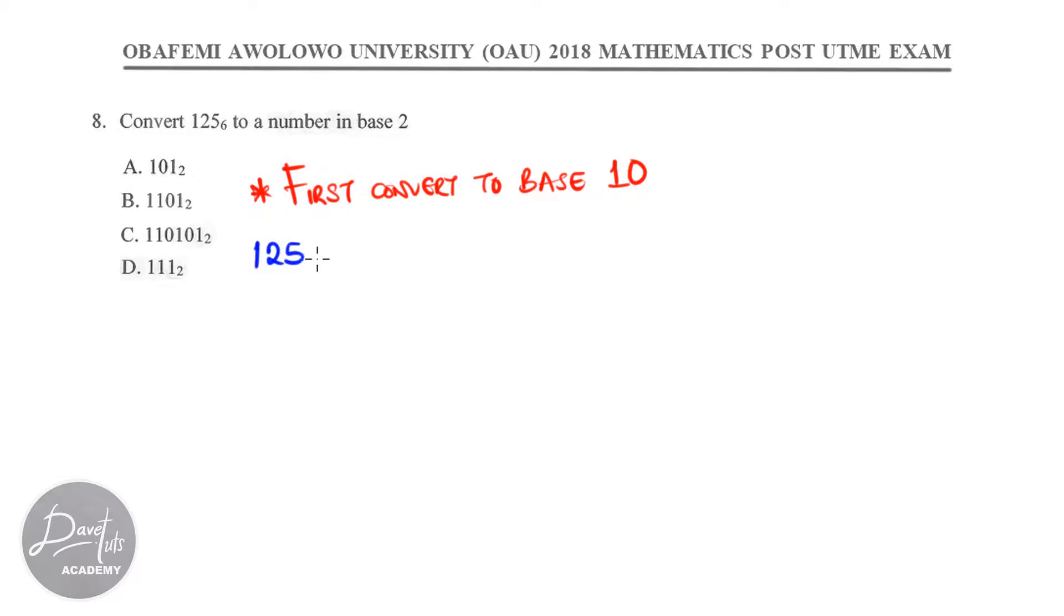So, how do we now get this 125 base 6 to base 10? We are going to multiply each of the digits by 6 raised to power the corresponding power of 6. So now, for the last entry 5, we have 6 raised to power 0, for 2, 6 raised to power 1, and for 1, 6 raised to power 2 as shown.